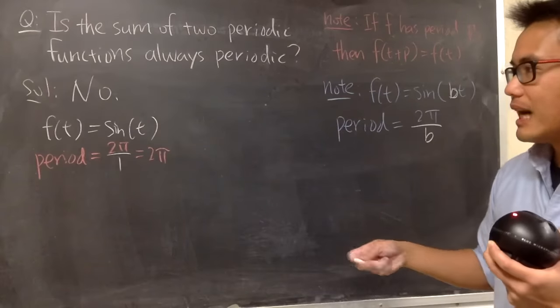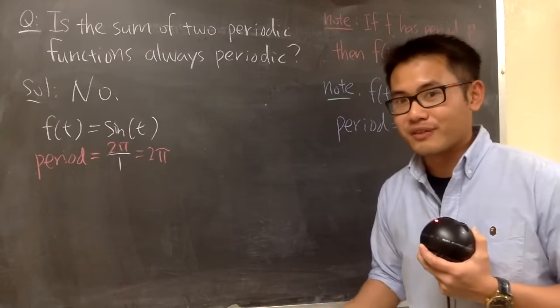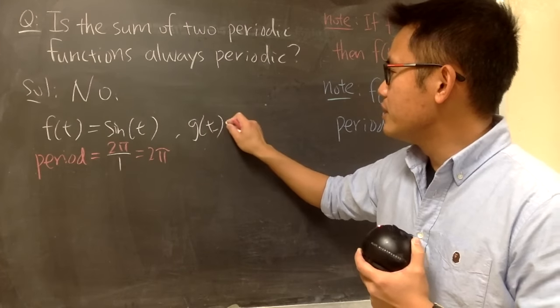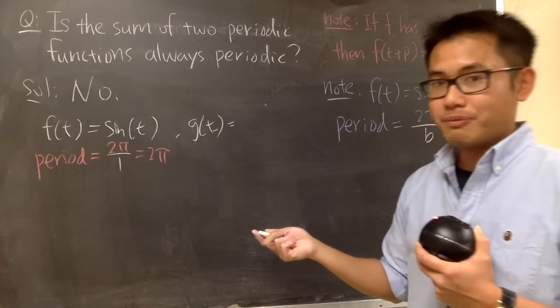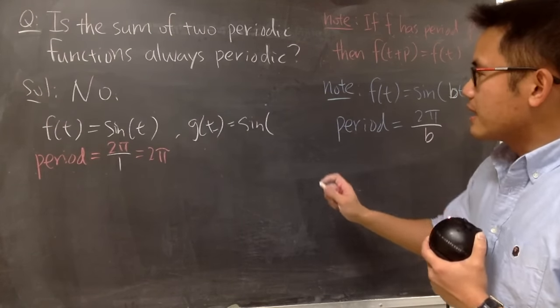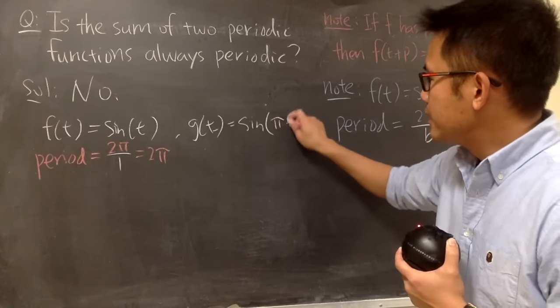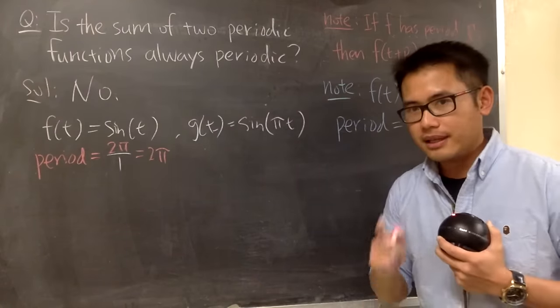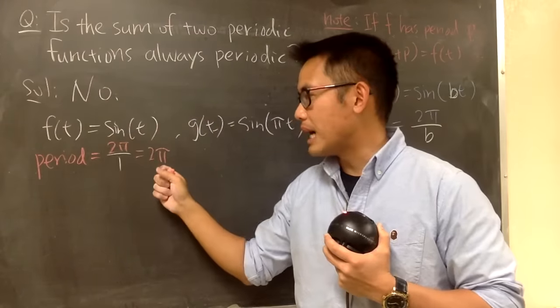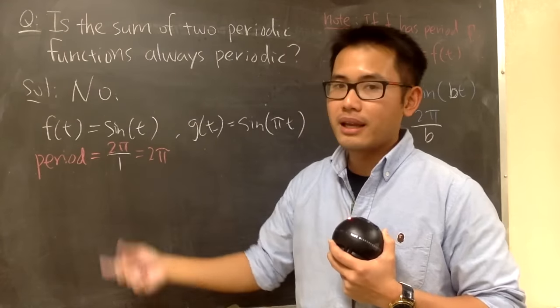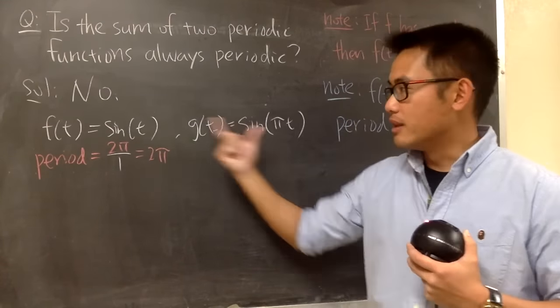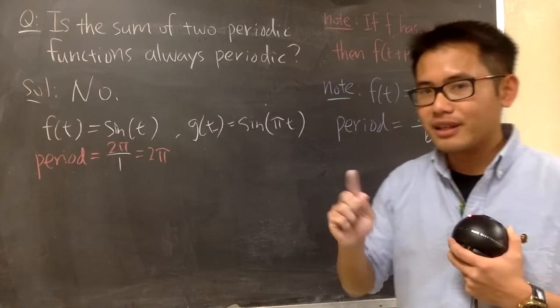And now, let's have the second periodic function. I will call this to be g(t). And when we have g(t), this time, I just want to have this. I am going to say sine of πt in this case. And here's the reason. The first function that I have right here has a π in the period, right? This is 2π. But if I don't have any multiple π in my period, then the sum of these two is not periodic. Let me show you why.